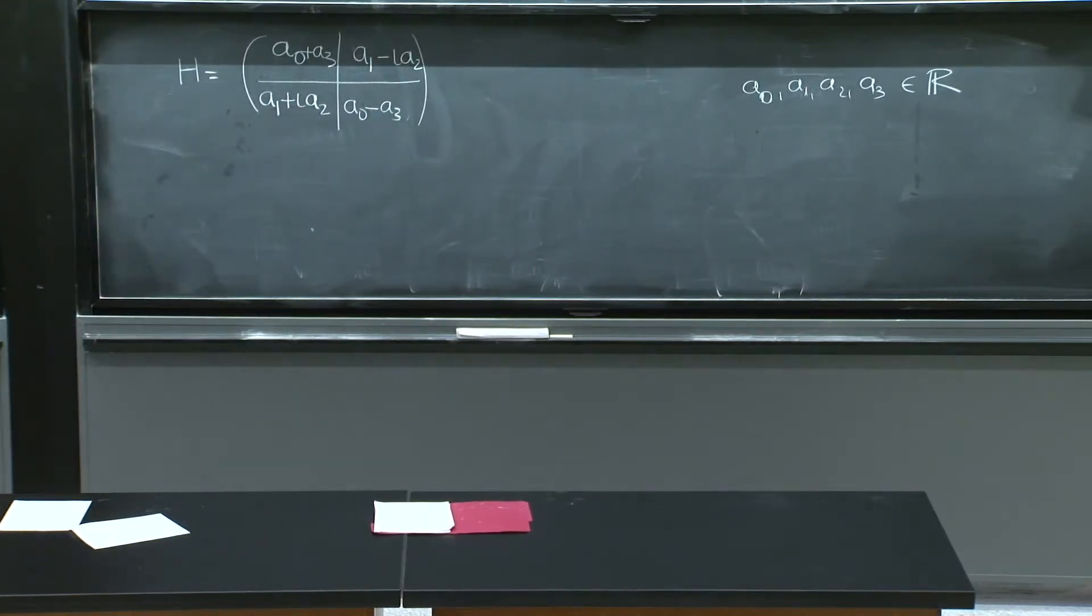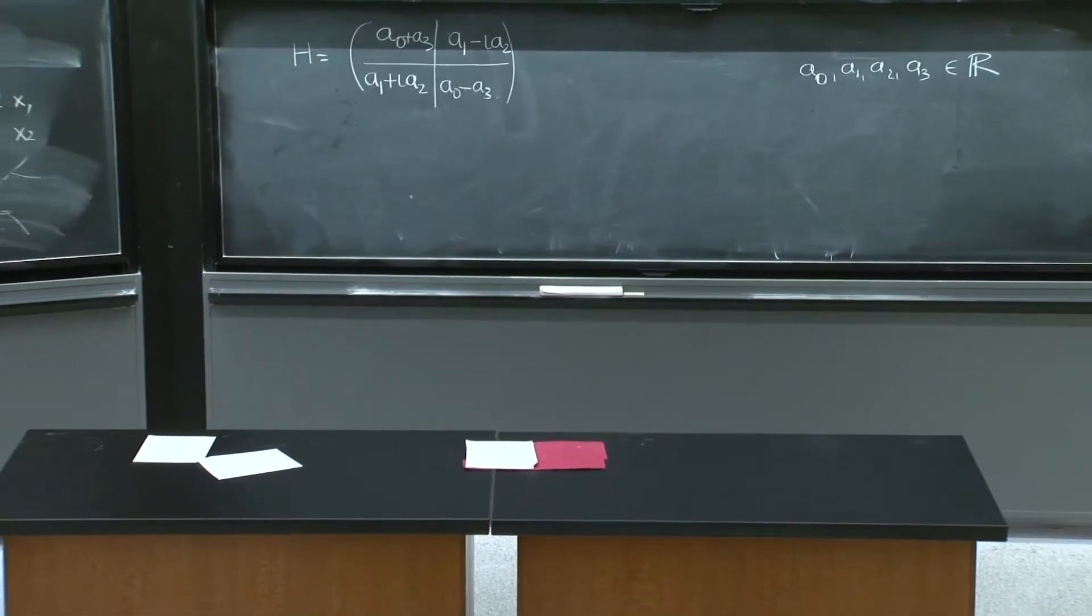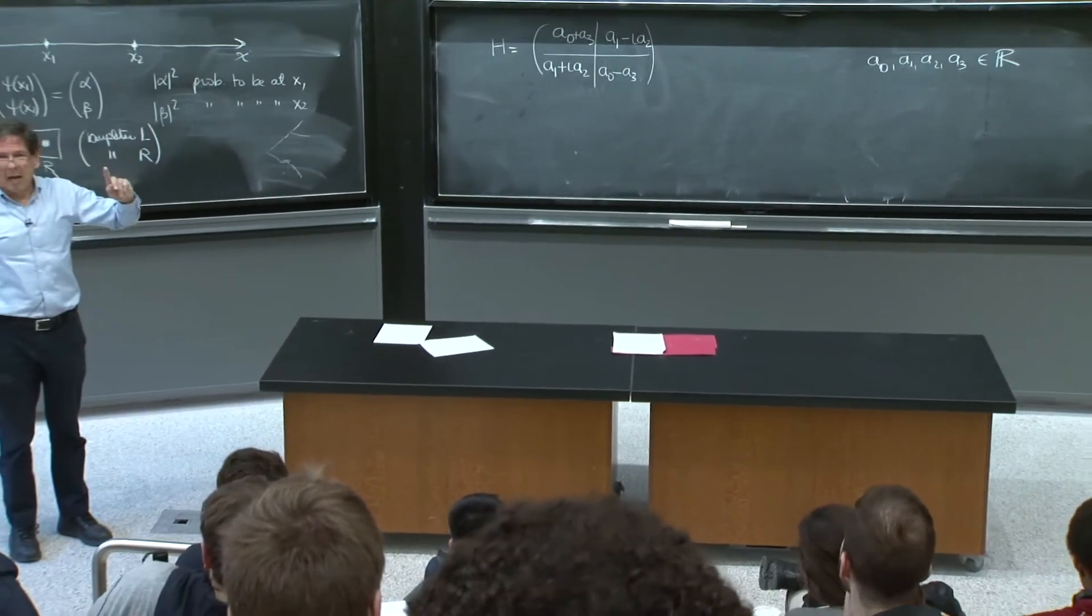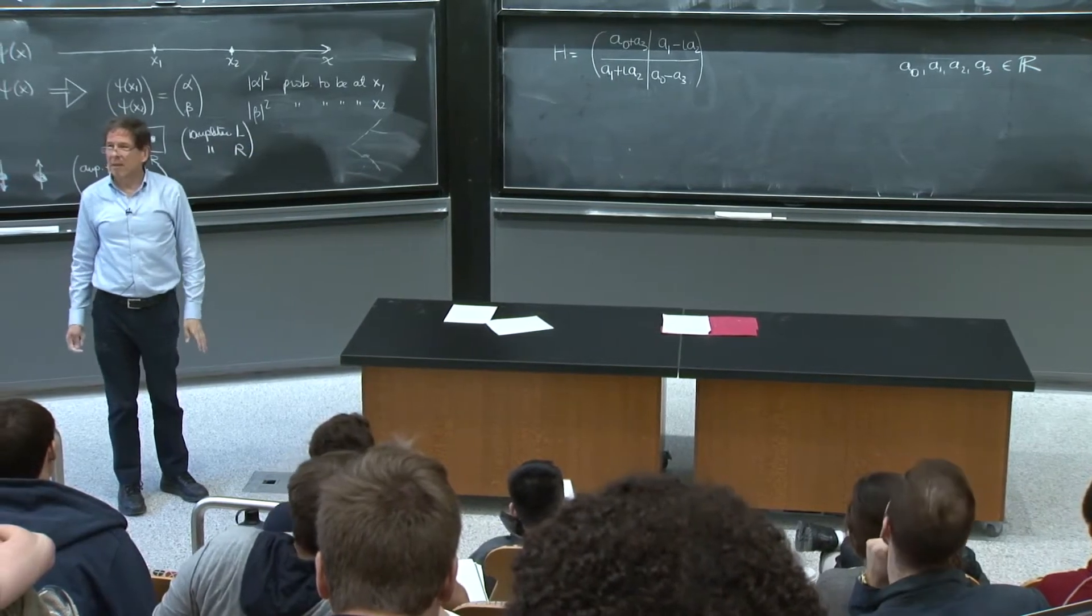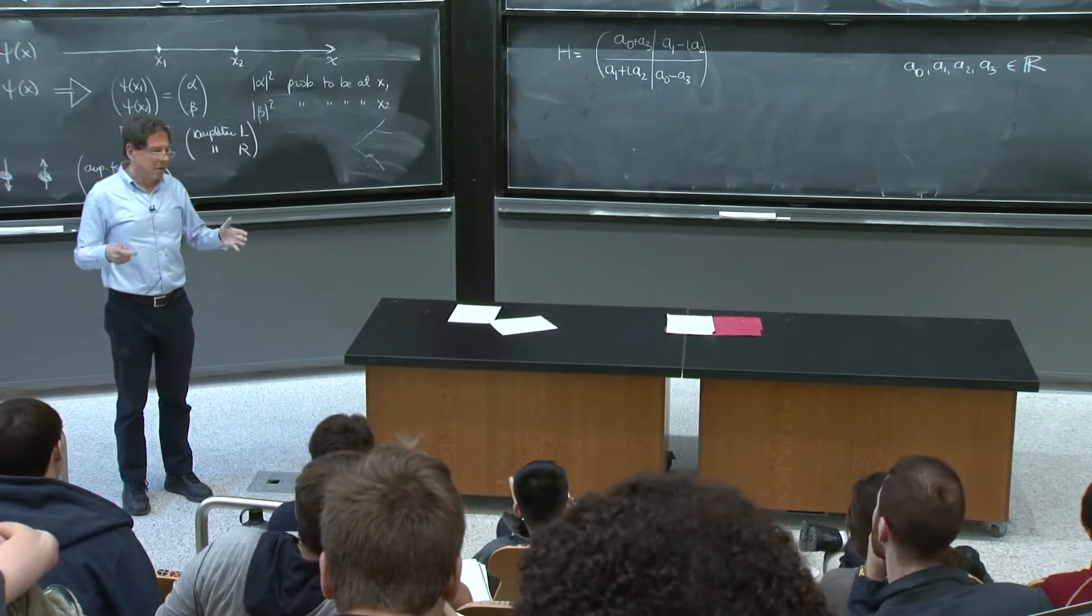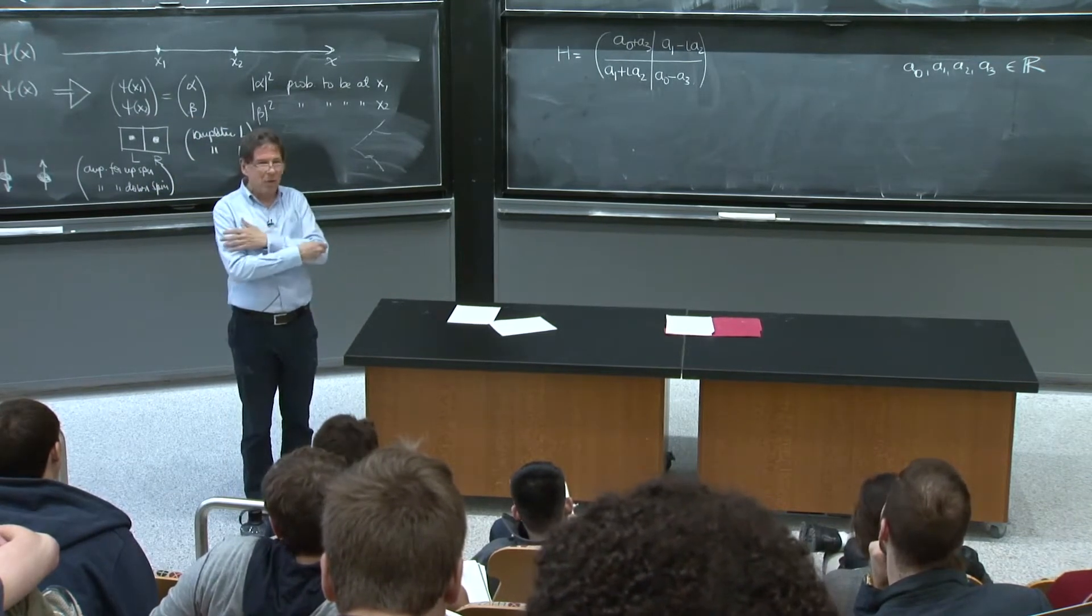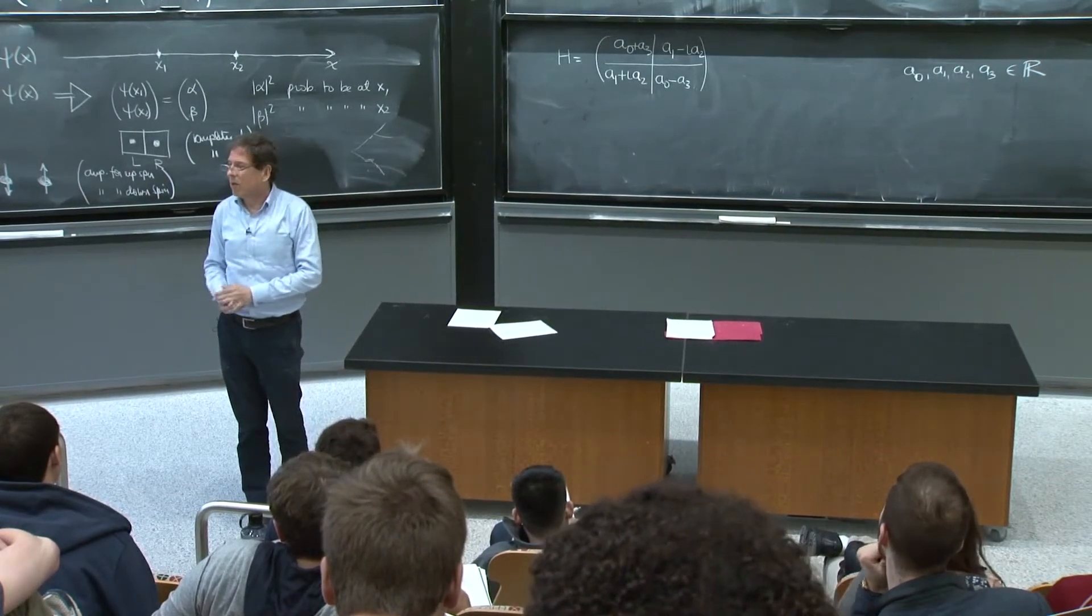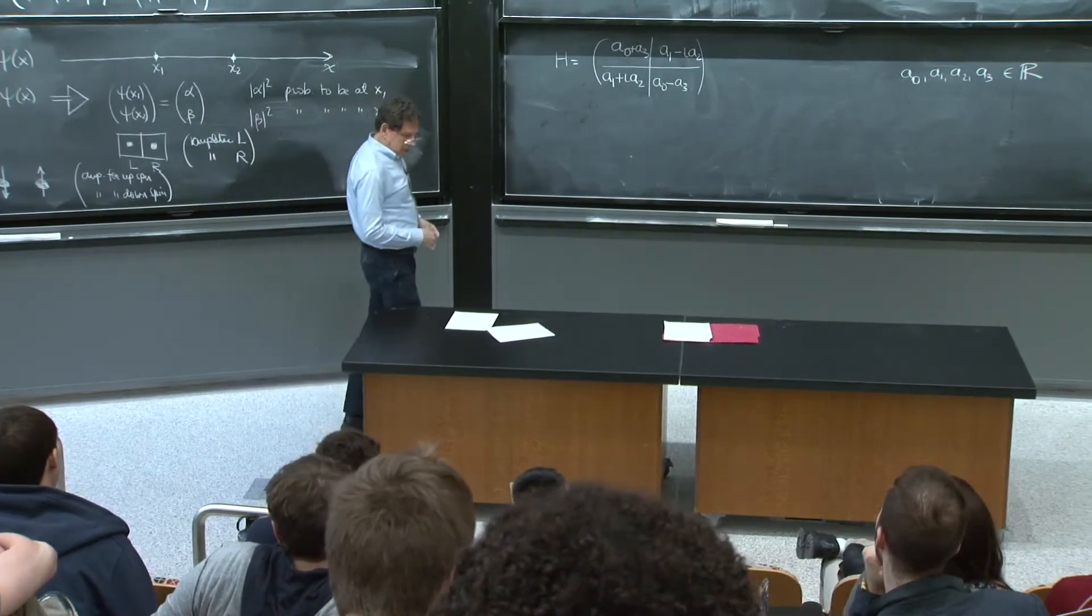So this is actually, I claim, the most general 2 by 2 Hermitian matrix. Time independent. You see, we've solved all our quantum mechanics this semester has been time independent potentials. So here, it's time independent. And now, this is the most general Hamiltonian you could have. That's it. Again, when you see something like that, you realize that in an hour or two, or after some thinking, you will have solved the most general dynamical system with two degrees of freedom in quantum mechanics.